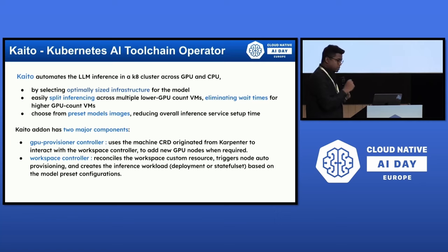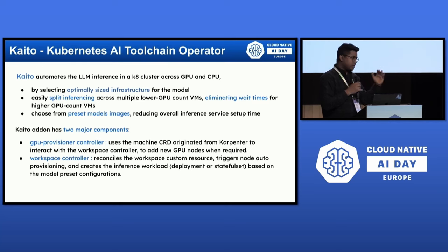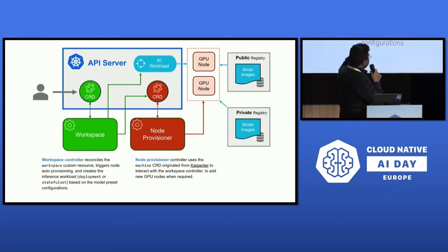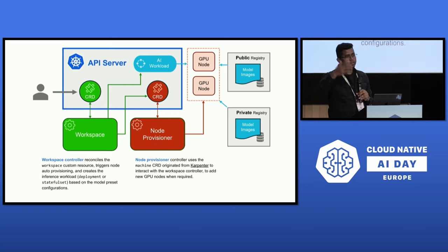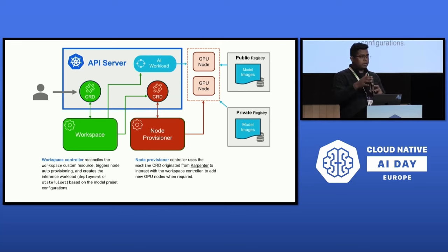KAITO has two major components. First is the GPU provision controller, which uses a machine custom resource definition — originated from Karpenter — and interacts with the workspace controller to add new GPU nodes into the cluster whenever required. In an upscaling scenario, it adds resources back into the cluster. Second is the workspace controller, which reconciles all CRDs, triggers auto node provisioning, and handles all management work. When you apply a CRD, the workspace controller talks to the node provisioner, provisions a node, and deploys the model into the cluster.